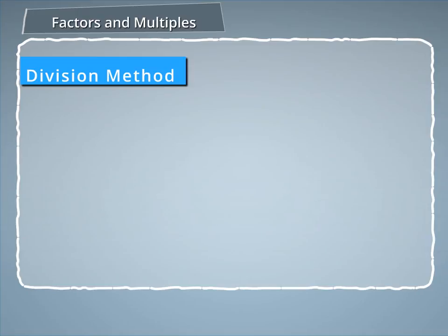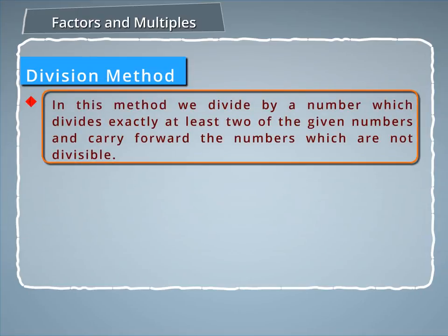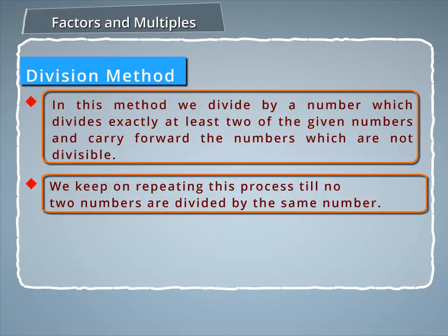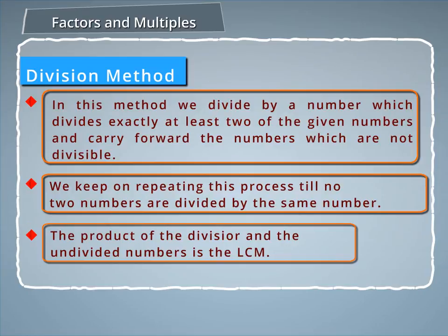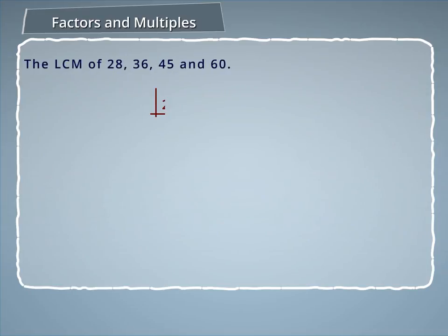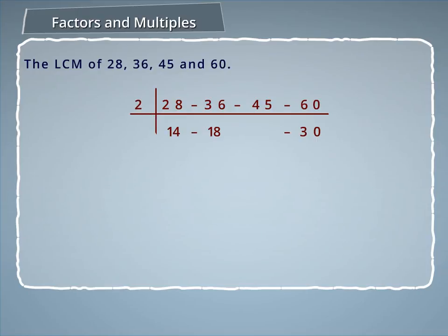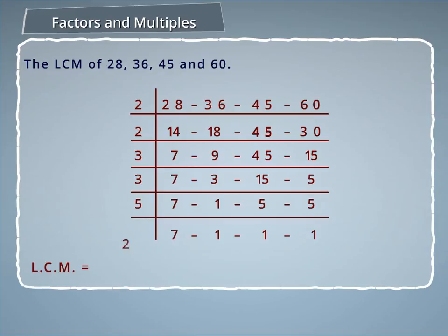Let us find LCM by the Division Method. In this method, we divide by a number that divides at least 2 of the given numbers and carry forward numbers that are not divisible, repeating until no two numbers share a common divisor. The product of all divisors and the remaining undivided numbers is the LCM. For 28, 36, 45, and 60, the LCM is 2 × 2 × 3 × 3 × 5 × 7, which equals 1260.